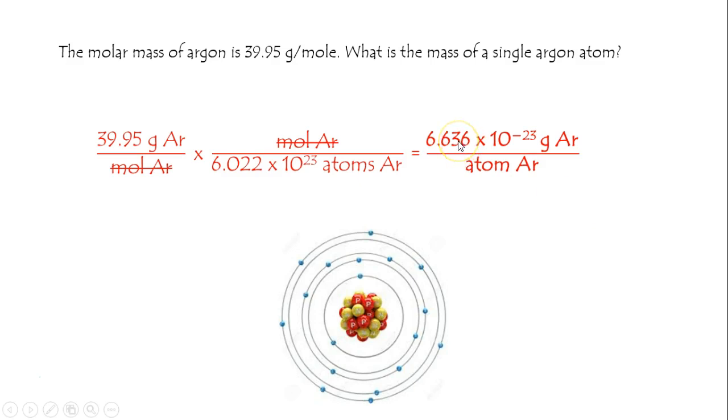And we get a very low number of grams, 6.636 times 10 to the minus 23rd grams is the estimated mass of an atom of argon.